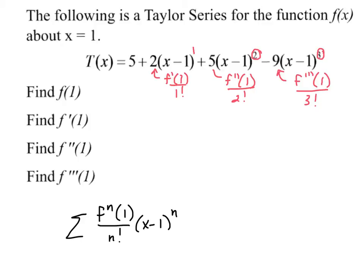And I guess this first one, because there isn't a power, we consider this just the 0 derivative, which is just the function over 0 factorial. And remember, 0 factorial is 1. So 5, if we do the algebra, 5 is equal to the function's value at 1 over 1. So the answer for that one is just 5.